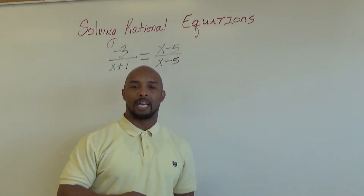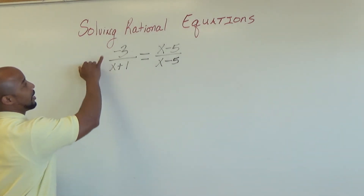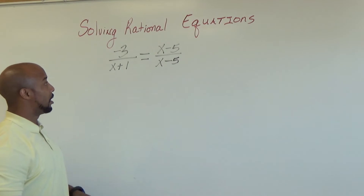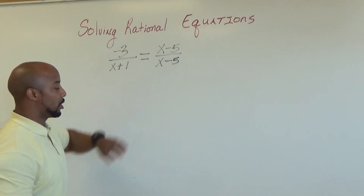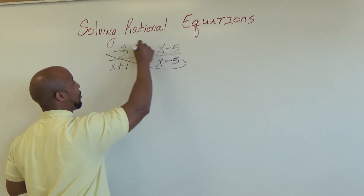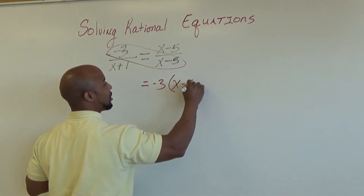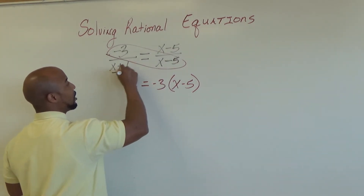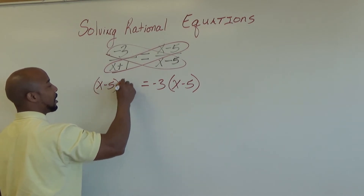Here we have another example of solving rational equations by cross multiplication. Behind me what I have is negative 3 divided by (x + 1) set equal to (x minus 5) over itself. Notice we have two ratios that are set equal to each other, therefore we have a proportion, and because it is set up as a proportion we can use cross multiplication. We are going to cross multiply — negative 3 times (x minus 5), and on the other side x minus 5 times (x plus 1). Notice here we have a binomial times a binomial.